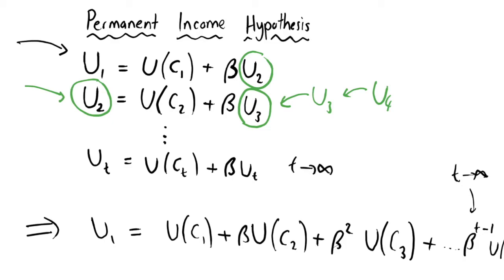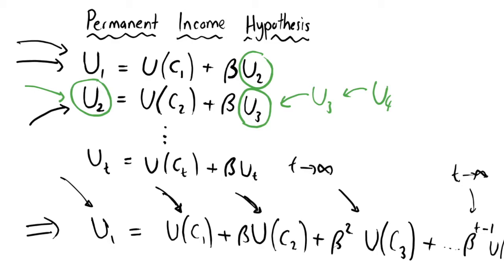As you can see, the person in generation one cares about their own utility, they care about their children's utility but discounted, they care about their grandchildren's utility but discounted slightly less, because person two cares about that person's utility, and person one cares about person two's utility, and so on. So each generation acts as if it's infinitely lived. Person one is choosing their consumption based on maximizing this whole sum. They don't just want to maximize the utility they get from their own consumption, but they perhaps want to leave a bit of income for their child, so their child can leave money for their grandchild, and so on. So this is how our utility representation looks.